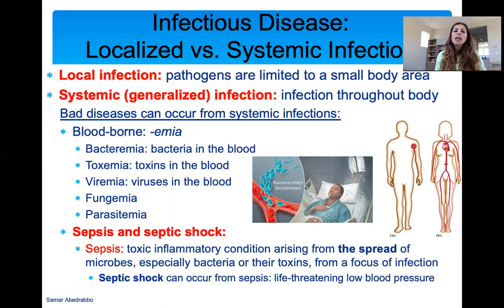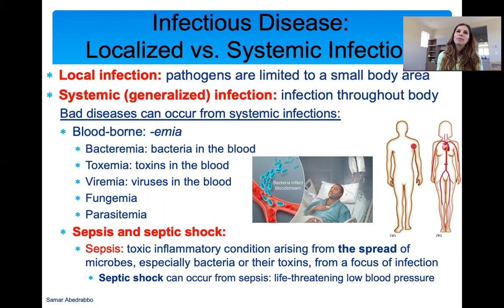Bloodborne infections are an example of systemic infections. Anything ending with -emia is in the blood: bacteremia is bacteria in the blood, toxemia is toxins in the blood, viremia is viruses in the blood. When we have any of these organisms in the blood, it can lead to sepsis. Sepsis is the spread of microbes from their point of infection — they spread everywhere. It's a very toxic condition that can lead to septic shock, which is life-threatening low blood pressure. Sepsis and septic shock are very serious conditions people in hospitals deal with all the time.